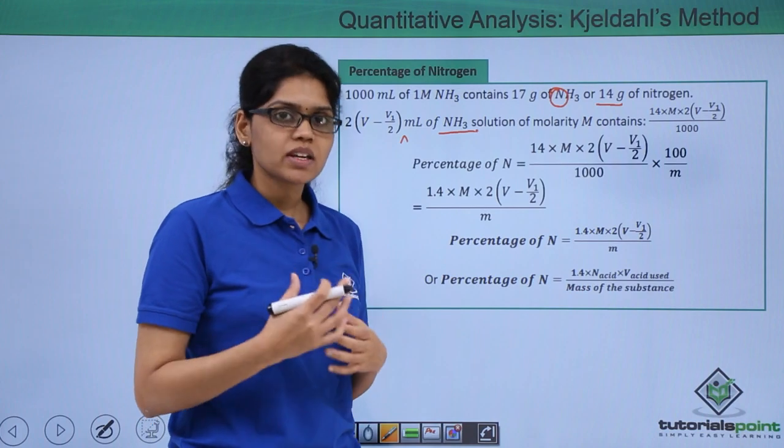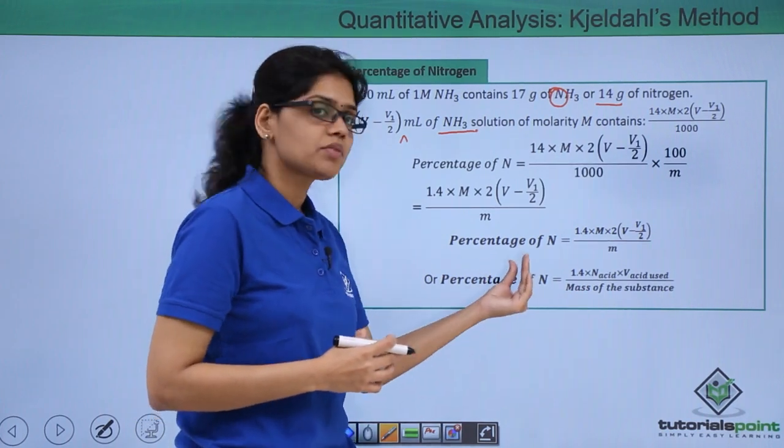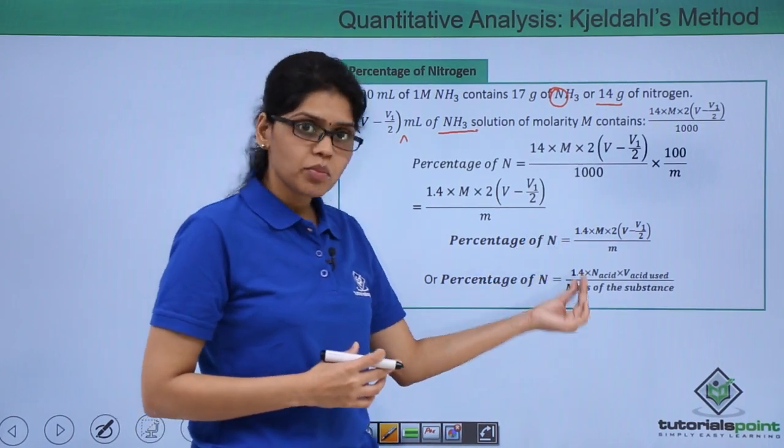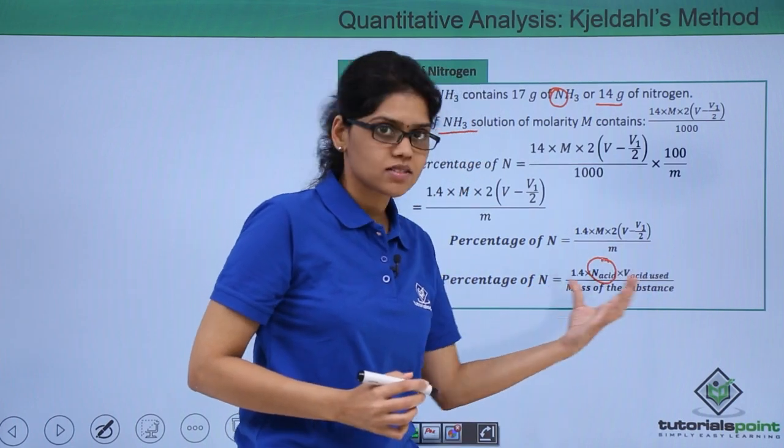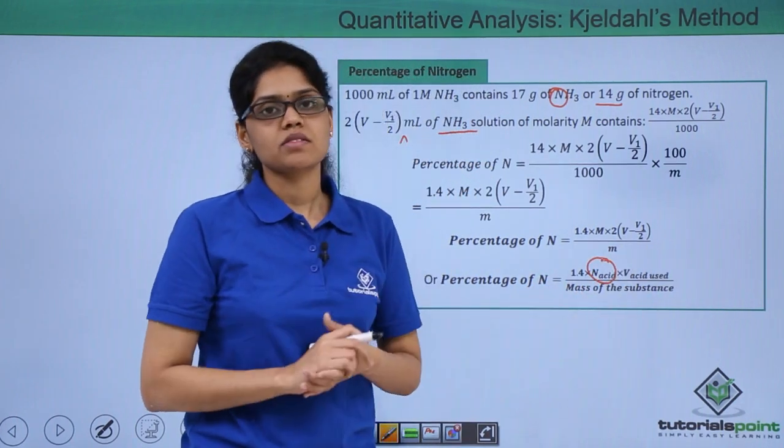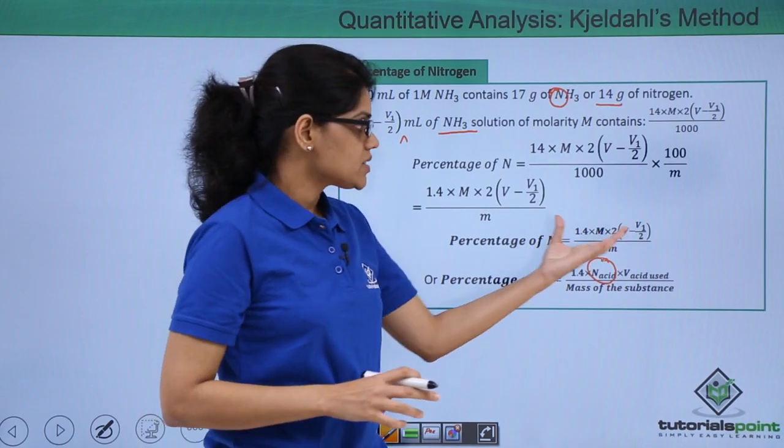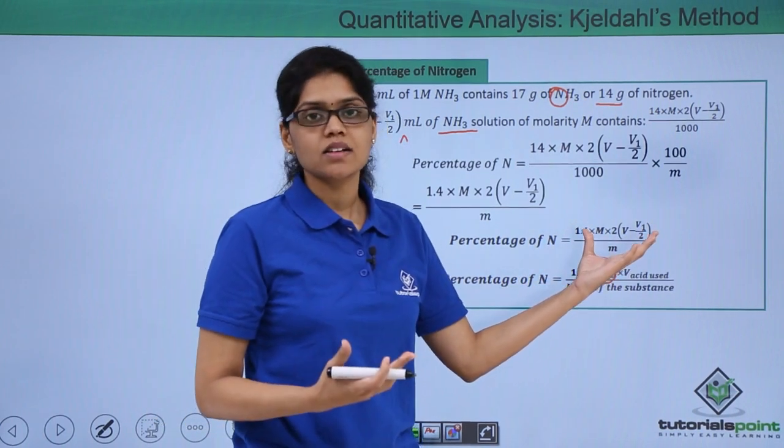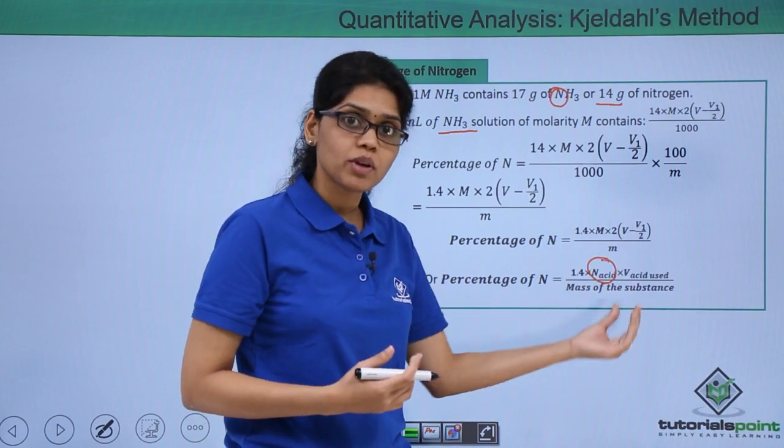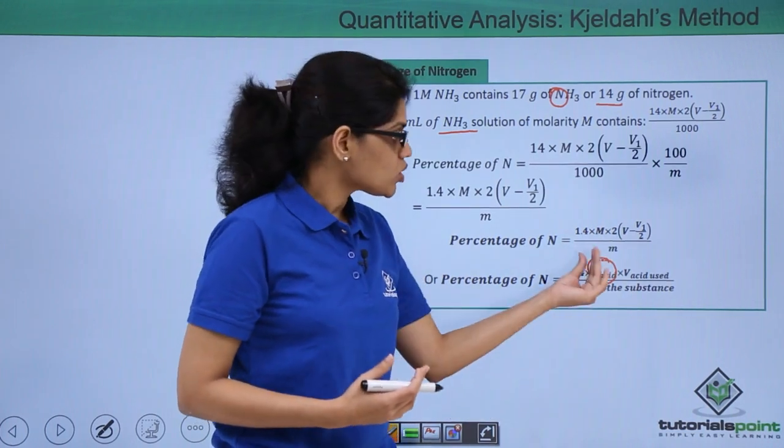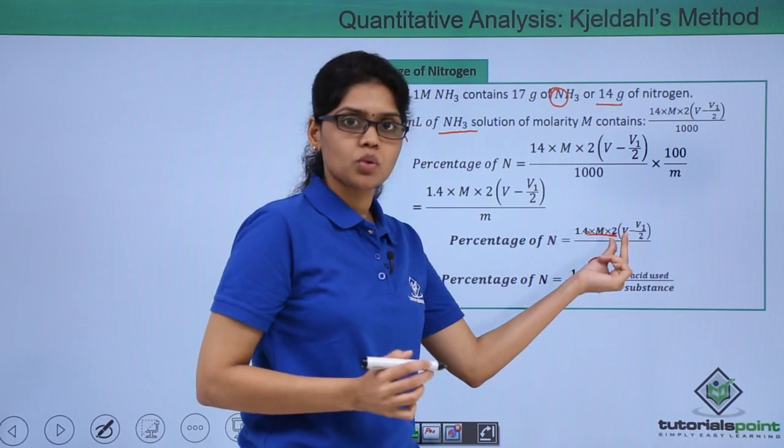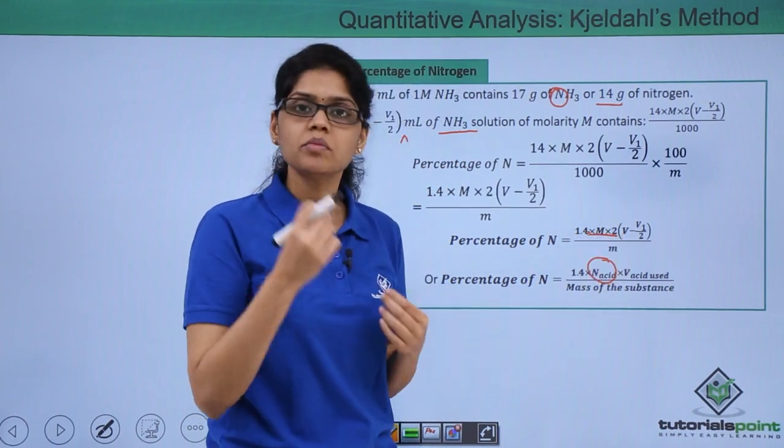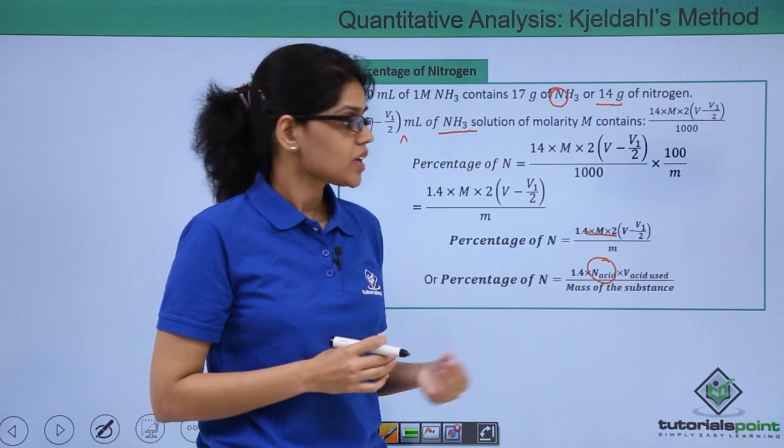Another formula that can also be used is that percentage of nitrogen equals 1.4 × normality of acid × volume of acid used / total mass of the organic compound. In this case we have used H2SO4 as our acid and you can see that these two formulas are very much related because normality of H2SO4 would be molarity of H2SO4 × 2 where 2 corresponds to the basicity of the acid.